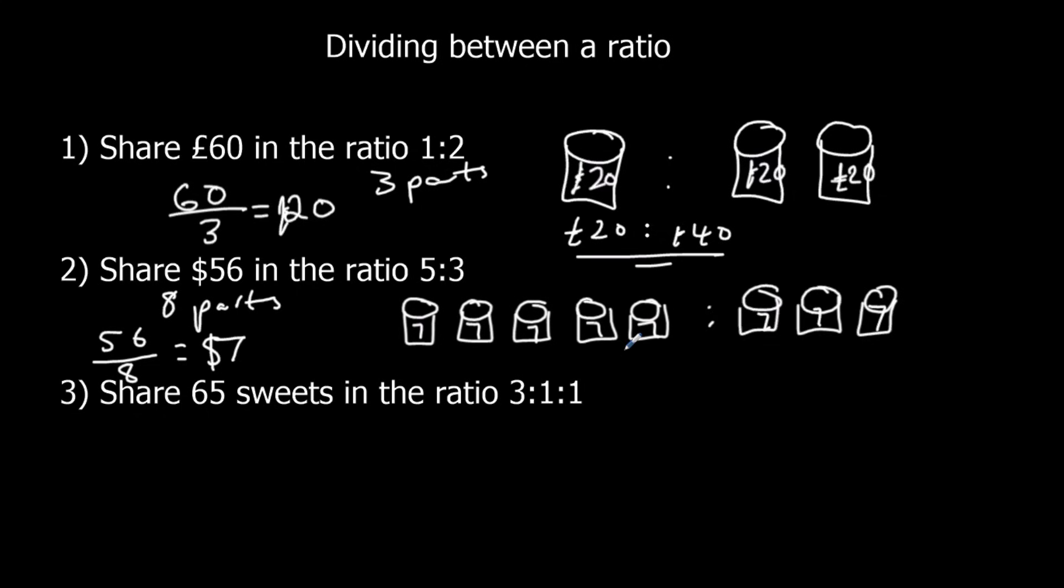We've got 5 7s. 5 times 7. So 35 dollars. And we've got 3 times 7. Which is 21 dollars. We can always check these by making sure they add up. So 20 and 40 add up to 60. 35 and 21 add up to 56. So we know that we've got the right amount of money at the end if we check that.